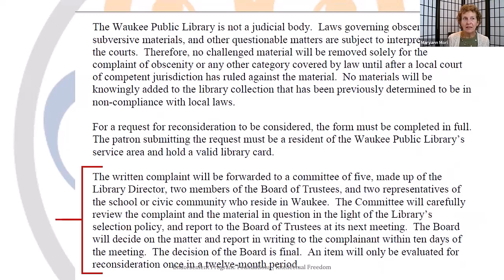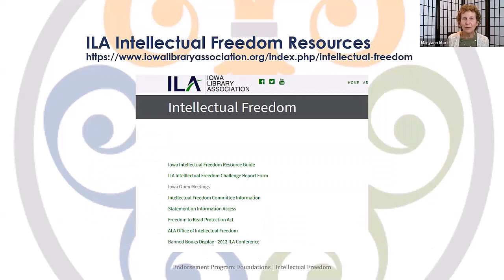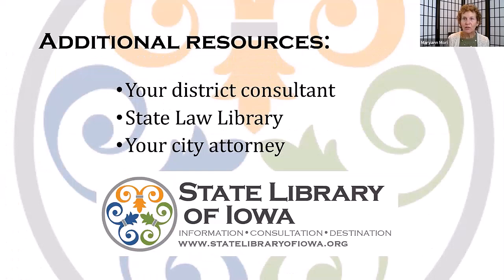Compare these examples with your library's policy and process. Don't wait until you have a problem — be proactive in having a clearly defined process for handling any challenges or reconsiderations. The American Library Association has an advocacy and intellectual freedom resource page on its website. The Iowa Library Association also has a page devoted to intellectual freedom. The State Library's website hosts a page devoted to intellectual freedom and confidentiality. Your district consultant can assist with learning more about intellectual freedom and can offer training sessions for your board. The State Law Library is also available to provide information and answer questions, and your city attorney may also be of help should you ever receive a reconsideration and need legal advice.